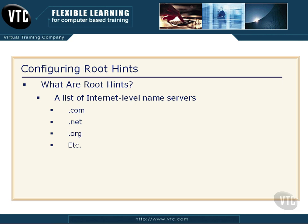So if I try to go to Microsoft.com and my DNS server doesn't have that IP address, it is going to jump out to these internet-level name servers. It's going to go to the one that's in charge of the .com listings and ask it for an IP address for Microsoft.com to see if it has one listed.